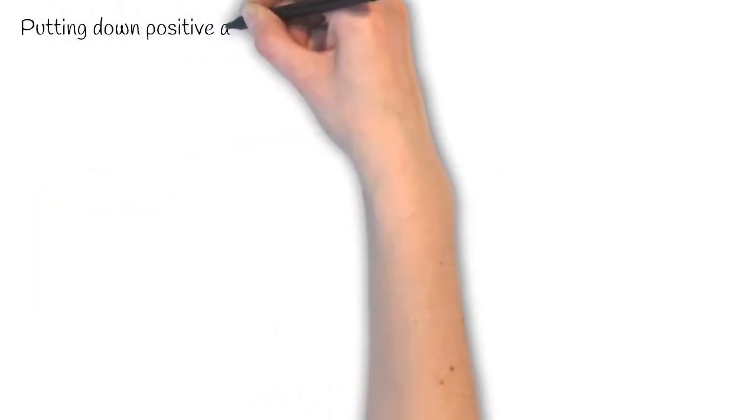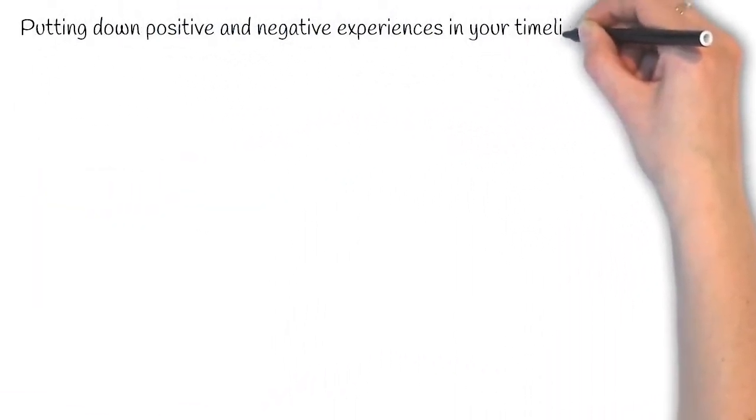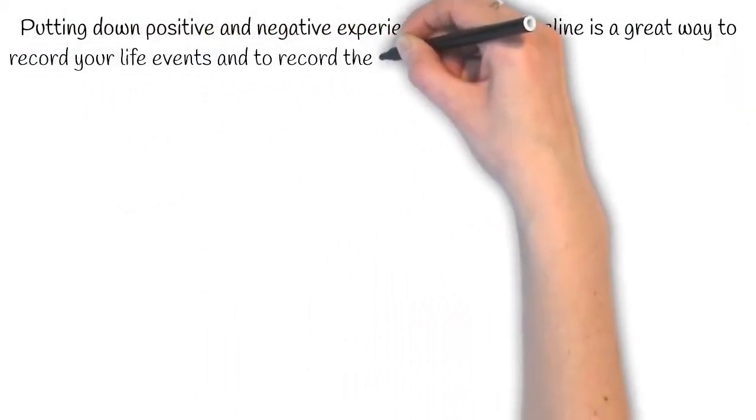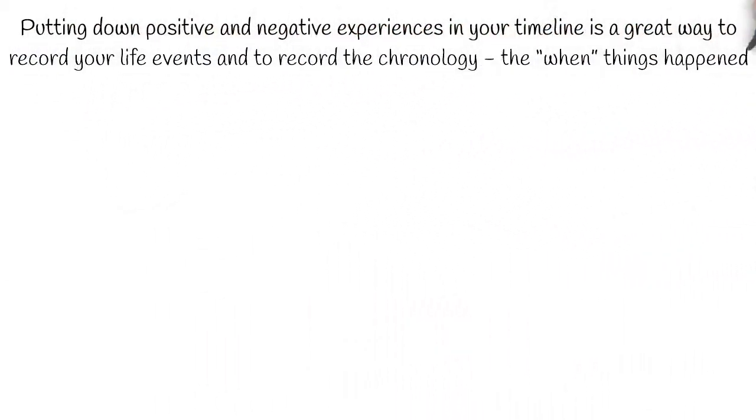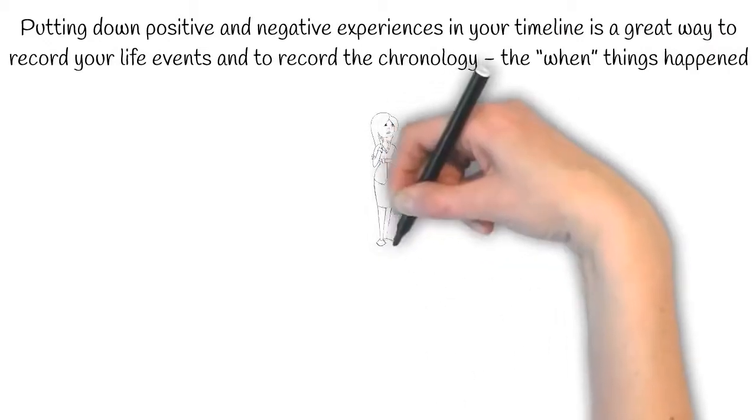Putting down positive and negative experiences in your timeline is a great way to record your life events and to record the chronology, the when, things happened.